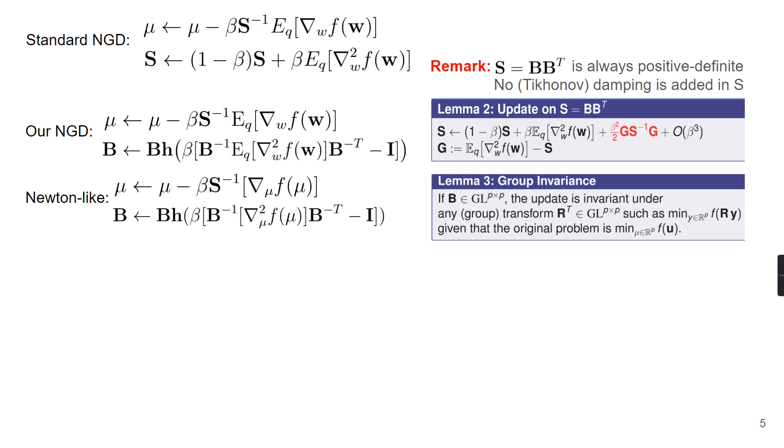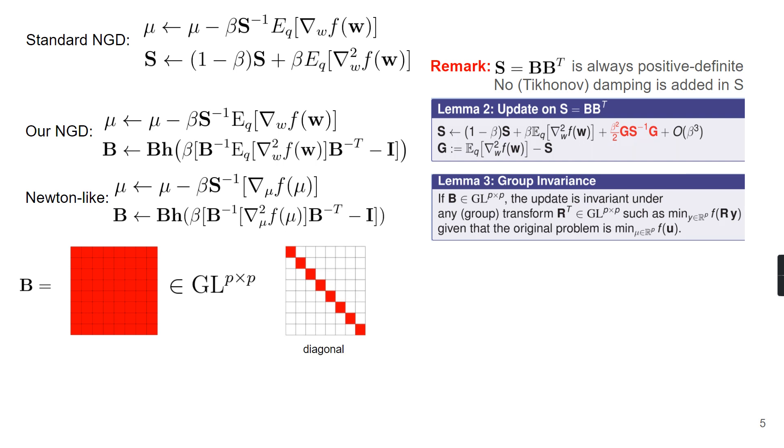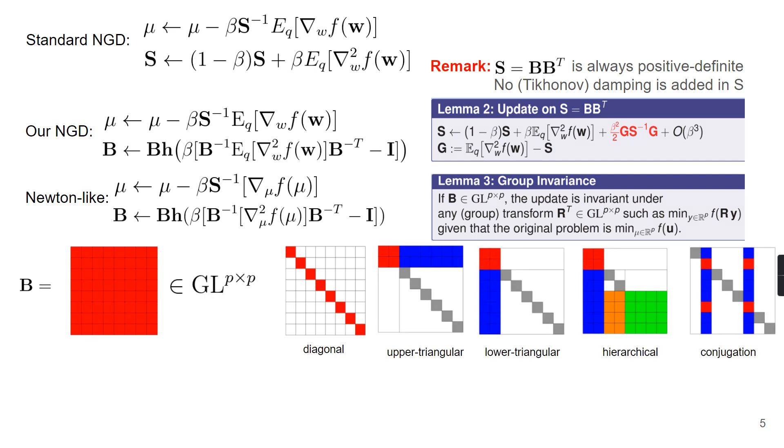Now we are going to discuss how to reduce the iteration cost. In previous examples, we assumed B is a dense invertible matrix, which is a member of the general linear group. We consider structure restrictions of the group, which gives us its subgroups. A straightforward idea is to just use the diagonal group. Luckily, we can do better. We can consider several useful group structures, such as a block upper triangular group, a lower triangular group, a hierarchical structure such as Heisenberg groups, and also group conjugation.